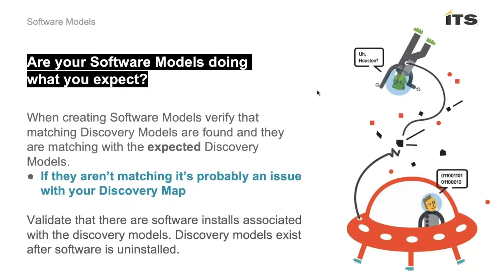Once you see those, you can confirm you're at least finding discovery models. If you don't see any, go into the discovery model table and verify that the edition and version you specified in your discovery map match what's found in that discovery model. For example, you may have put version '2018' in your discovery map, but the discovery model may say version '18' — meaning they're not going to match and it won't find those install records. When you see that happen, update your discovery map to match those discovery models.